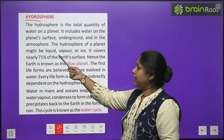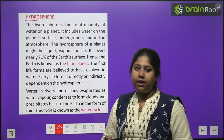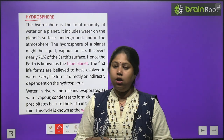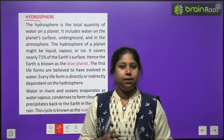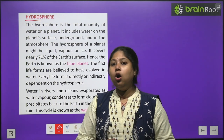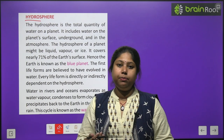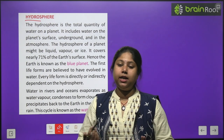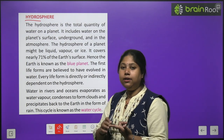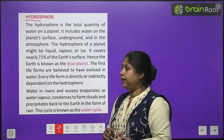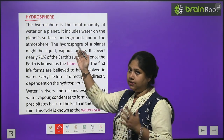The hydrosphere includes water on the planet's surface, underground, and in the atmosphere — water below the Earth's surface in the water table, plus water visible in rivers, streams, lakes, and ponds, and also water in the form of moisture or water vapors mixed in the atmosphere. In all three forms — liquid, gaseous, and solid — all forms of water fall under the hydrosphere.